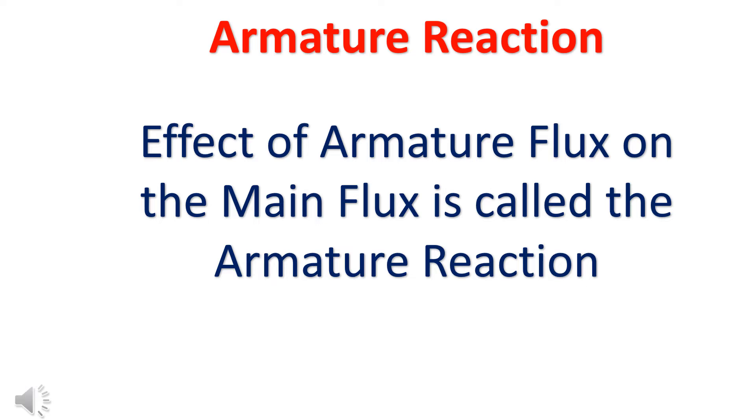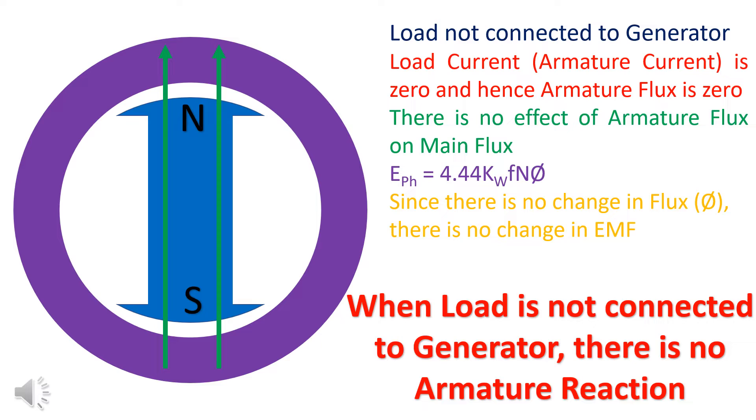The effect of armature flux on the main flux is called armature reaction. When the load is not connected to the generator, load current is zero. Armature flux is not produced. Since there is no effect of armature flux on the main flux, there is no armature reaction.